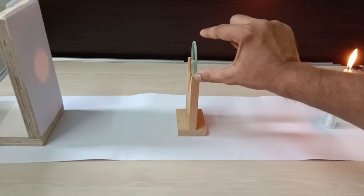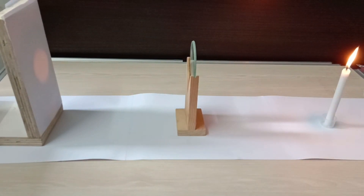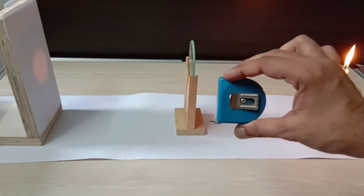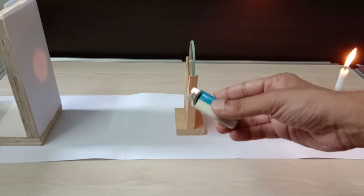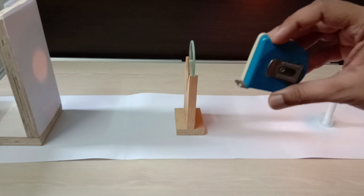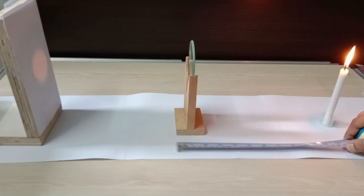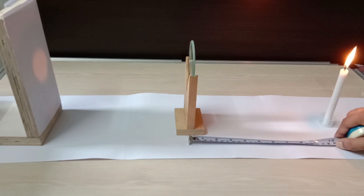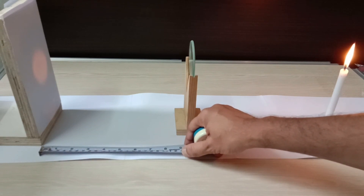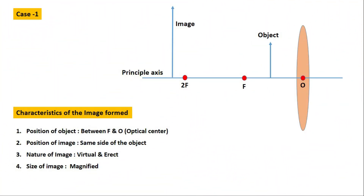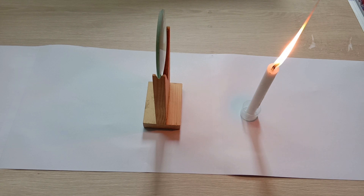The light rays coming from the candle will fall on the lens, and since the lens is converging it is going to converge the rays on the screen to obtain the image. If the image is real, we will be able to see it on the screen. I prefer a measuring tape over a scale to measure the distances. The distance from the candle to the lens is our object distance, and the distance from the screen to the lens is our image distance.